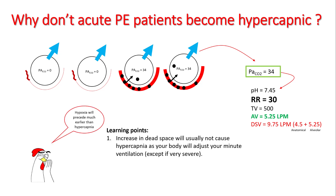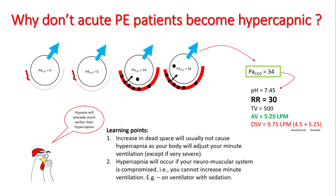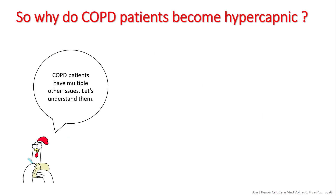The learning point here is that an increase in dead space will usually not cause hypercapnia, as your body will adjust minute ventilation. If the amount of dead space is extreme, hypoxia will come much earlier than hypercapnia. Hypercapnia can still occur if you have a neuromuscular problem preventing you from increasing minute ventilation — for example, if a patient is on a ventilator with heavy sedation, you might see them become hypercapnic.